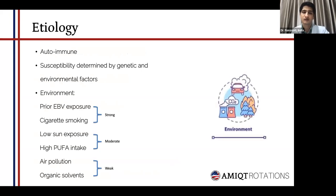Regarding the etiology, it's an autoimmune condition, and various environmental as well as genetic factors also play a secondary role in the onset of multiple sclerosis. For environmental factors, I've divided them under strong, moderate, and weak. The first two strong factors are prior Epstein-Barr virus exposure and cigarette smoking. For moderate: low sun exposure or vitamin D deficiency, as well as high polyunsaturated fatty acid intake — PUFAs are more commonly seen in flaxseed, fish oil, as well as sesame seed. Regarding weak factors, air pollution as well as gaseous organic solvents can nonetheless predispose to multiple sclerosis.